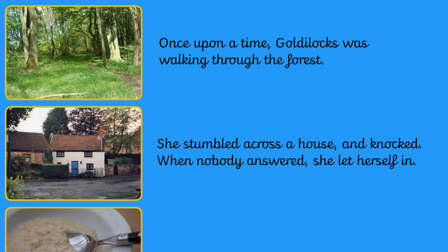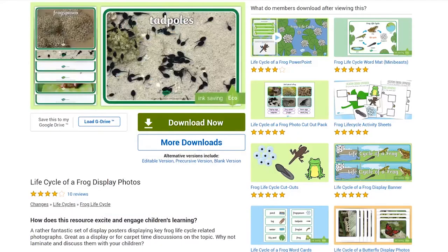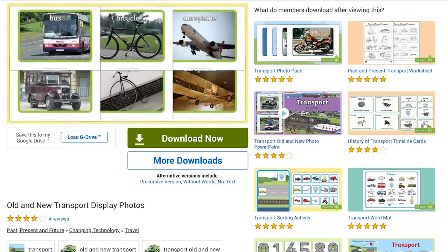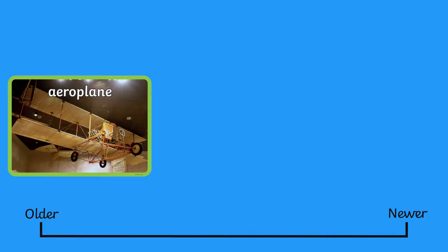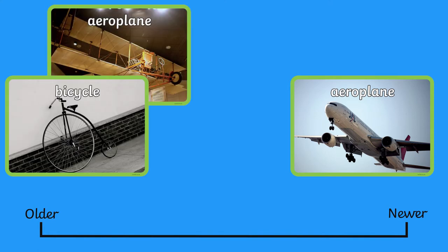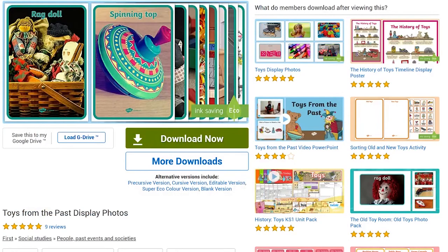There are also a number of life cycle cards — can your child put those events in order? Activity two is timelines. Using this old and new transport pack, task your child with putting these modes of transport in order from oldest to newest, then help your child to research afterwards to see if they were right. This activity could also be done with other packs, including toys of the past.